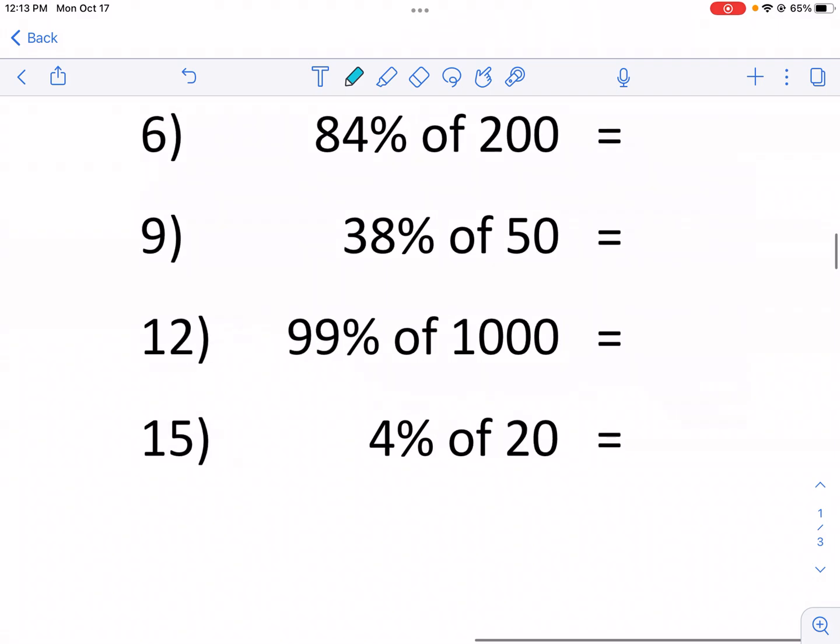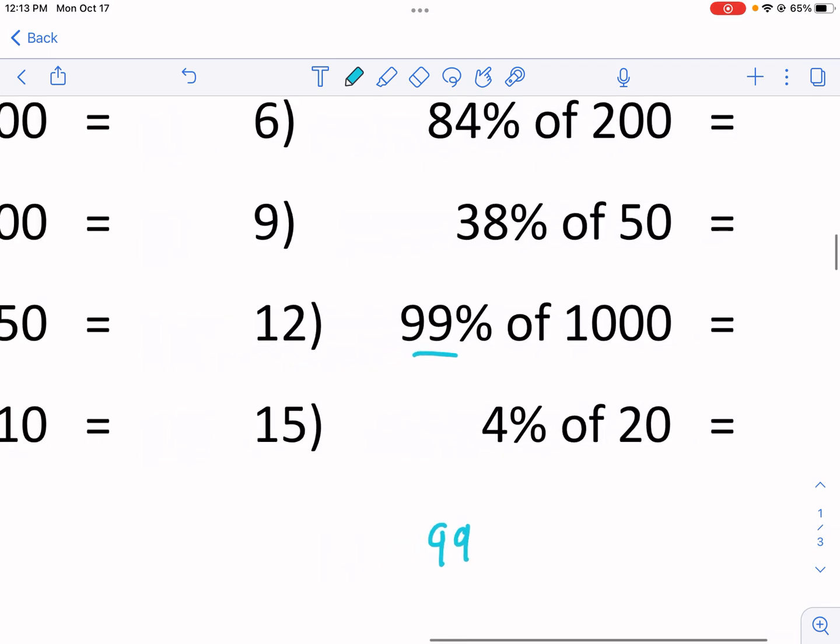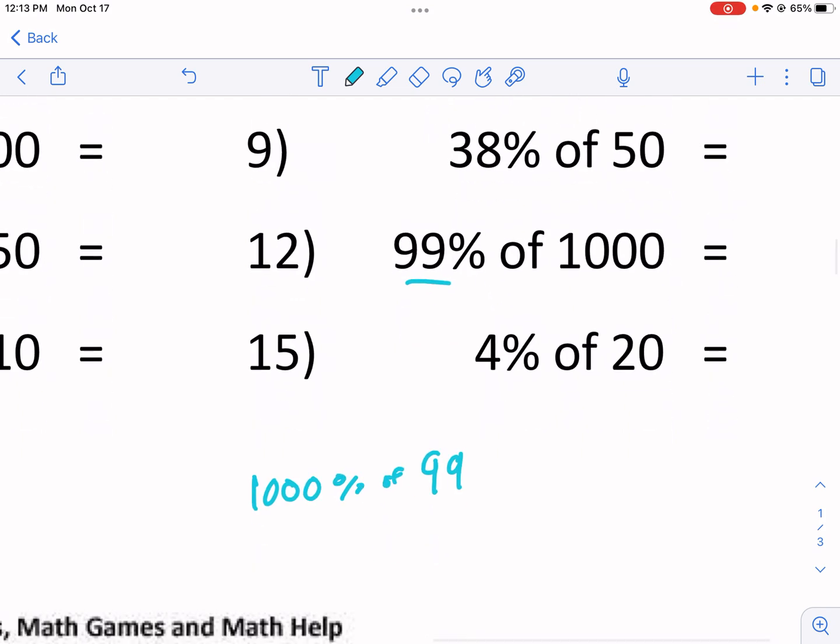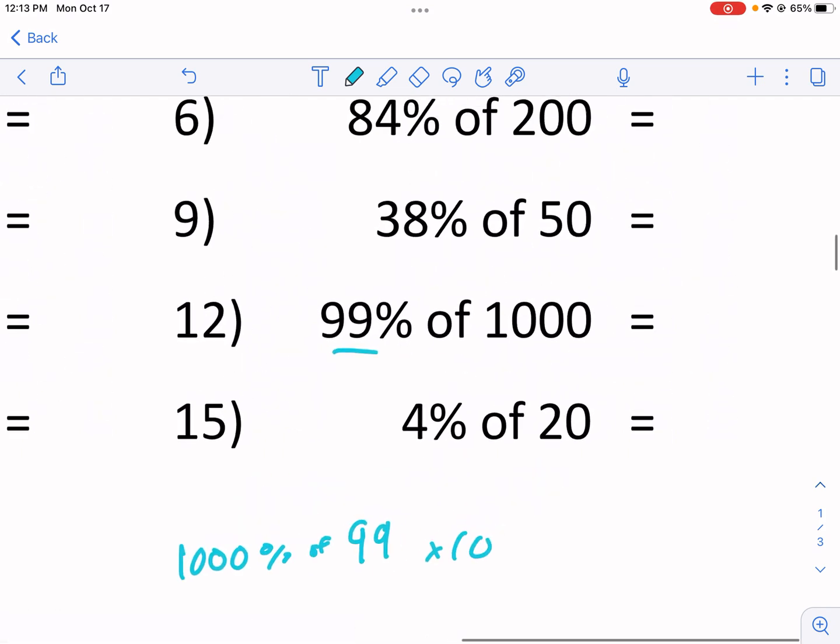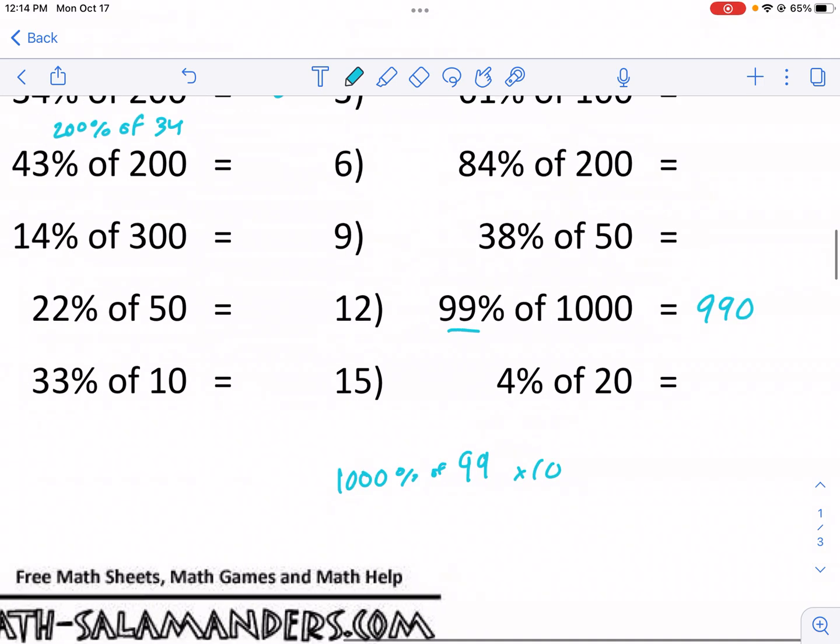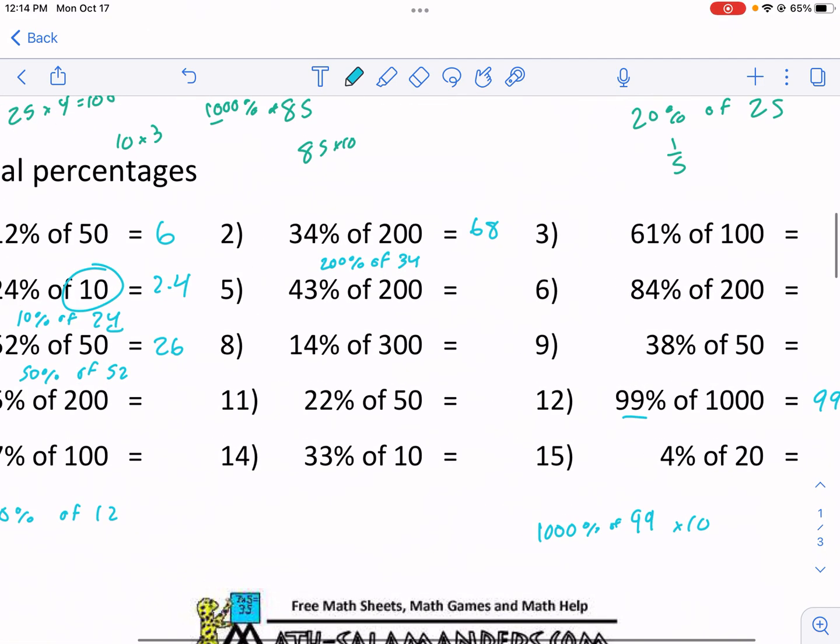Last one, probably this one, a little bit easier. If you have just, yeah, you could just do it this way. 99, 1,000% of that. Well, anytime I'm writing 1,000%, that means I'm multiplying by 10. So I'm just going to add a 0, 990. See what I mean? Kind of a simple way to do it.